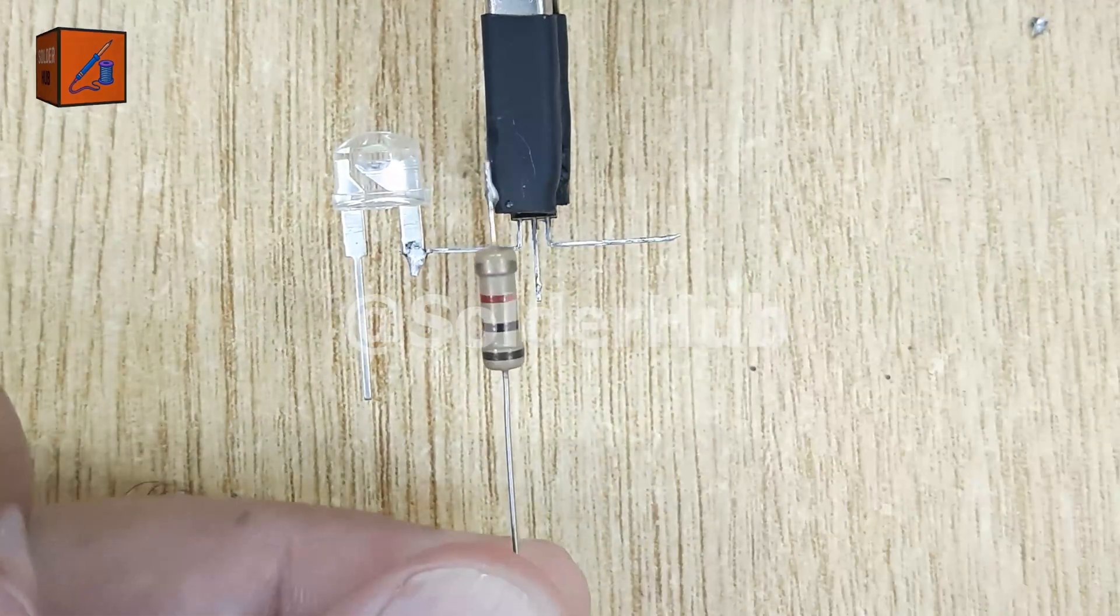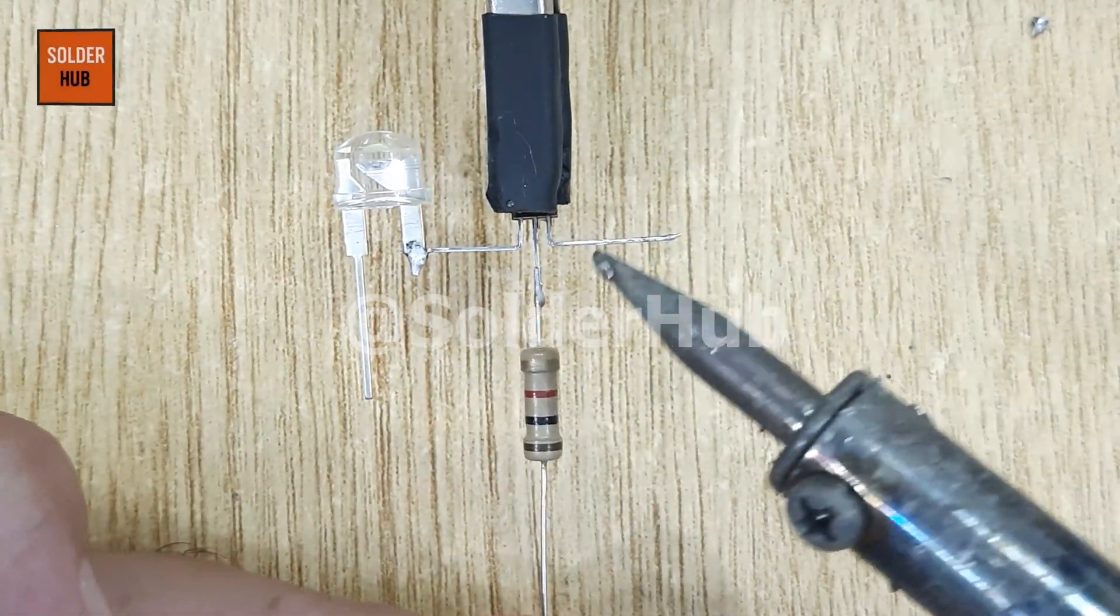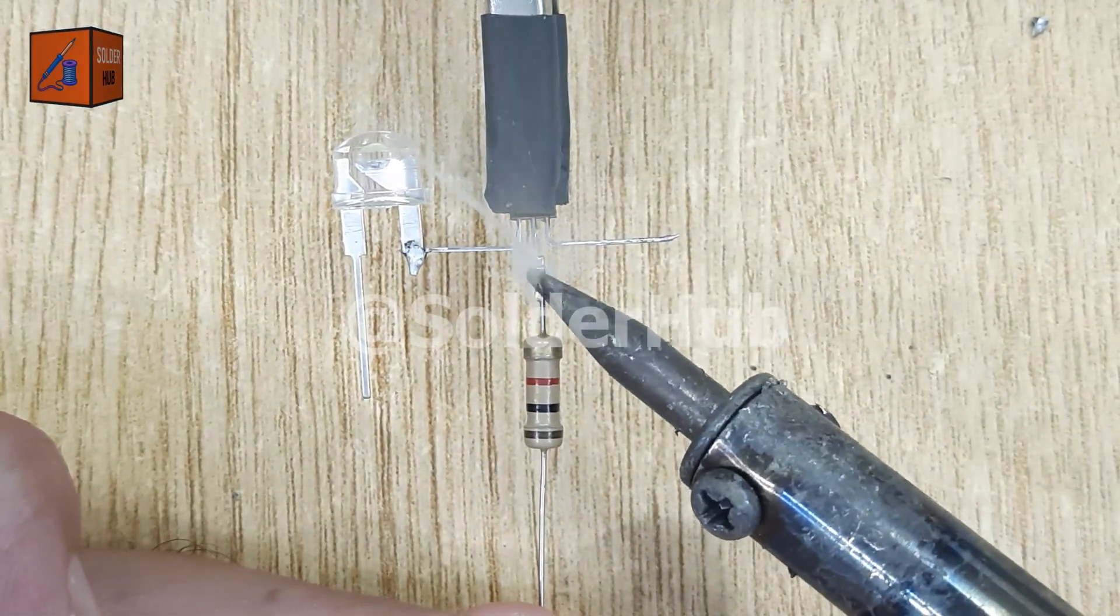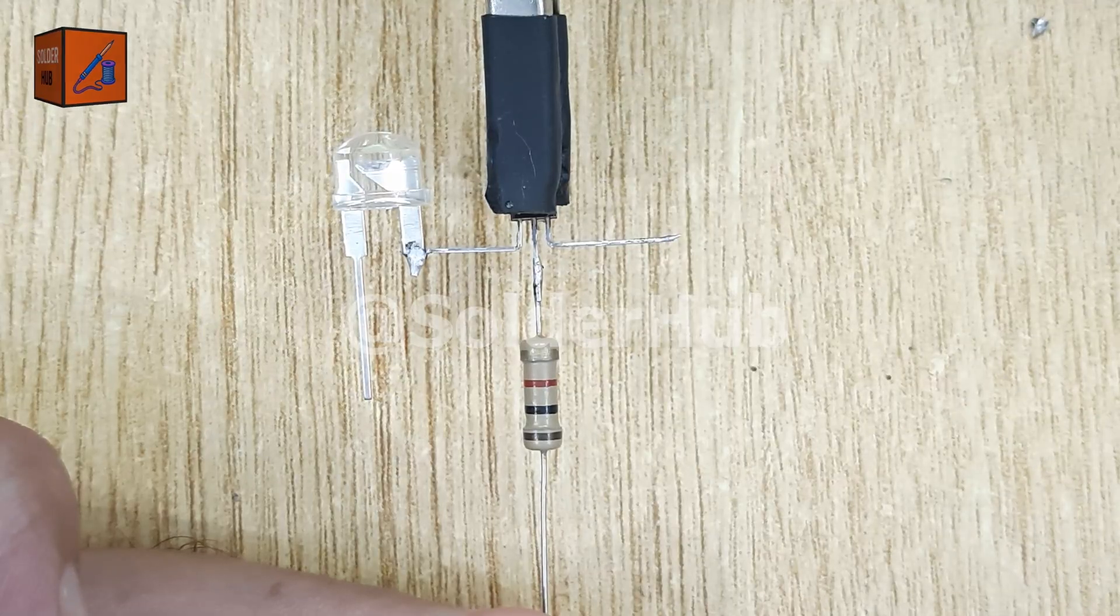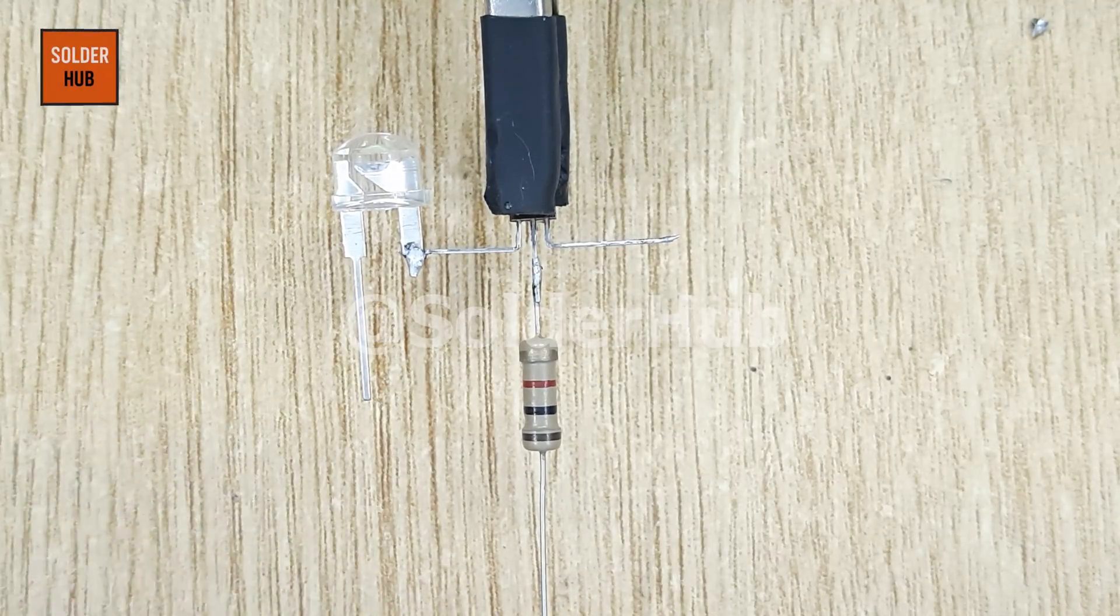Now it's time for a 1kohm resistor. This resistor will help limit the base current and protect the transistor. I'll solder one end of the resistor to the base pin of the transistor.